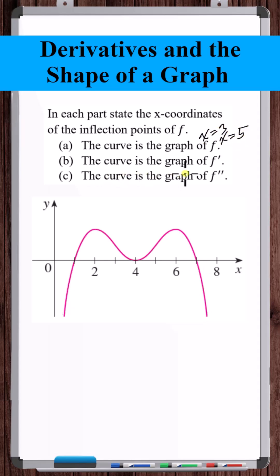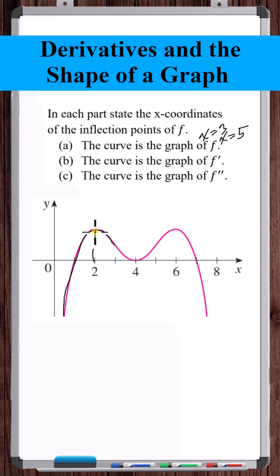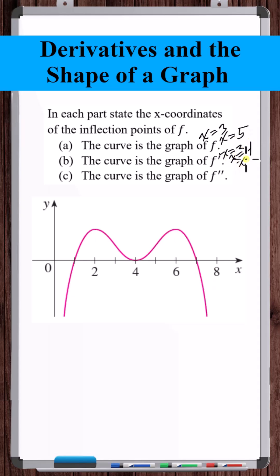Part B: the curve is the graph of f prime. So f double prime is the first derivative of this. In that case, we need to analyze where this function is increasing or decreasing. It increases, then changes to decreasing, then changes to increasing, then changes to decreasing again. So the inflection points are at x equals 2, 4, and 6.